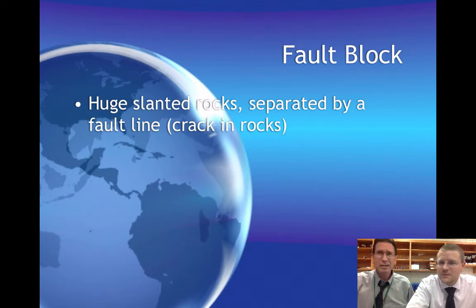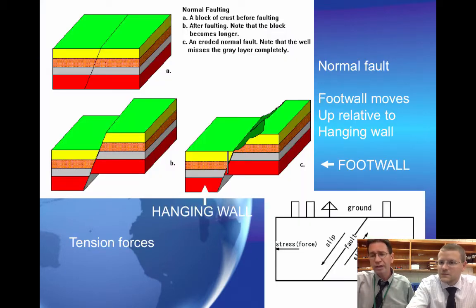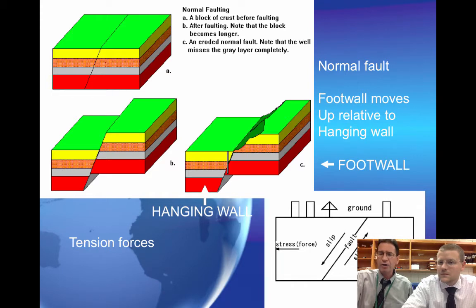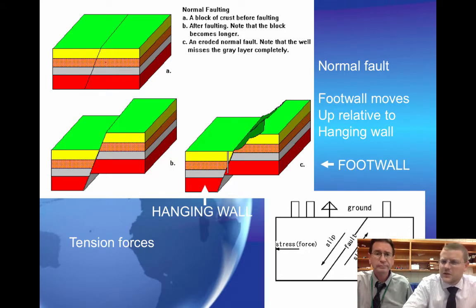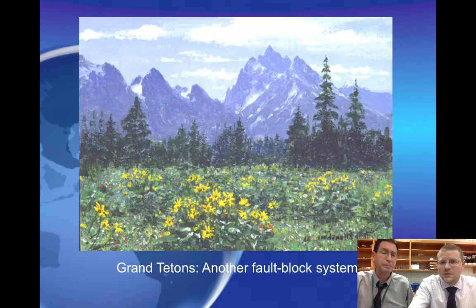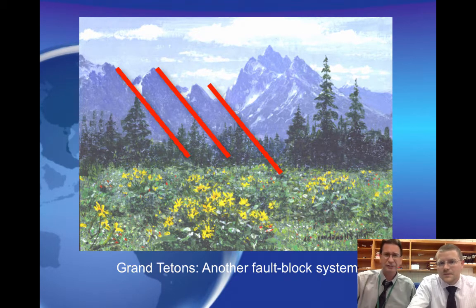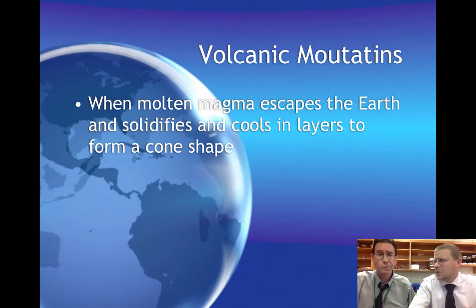Fault block mountains — you can tell them, if you can look at them from a distance, they all have a sort of lean to them. When you get compression from both sides, it actually breaks the rock, and that causes one side to rise up at an angle. It could also be caused by pulling apart — there are different kinds of faults. So fault block mountains can be caused by convergent or divergent plate boundaries. In this picture you can definitely see the lean to the left that fault block mountains exhibit.